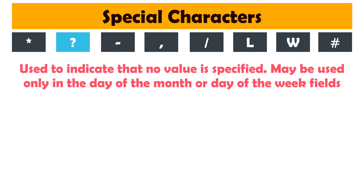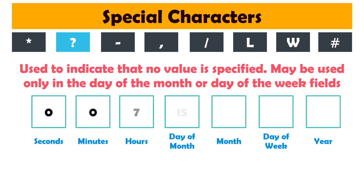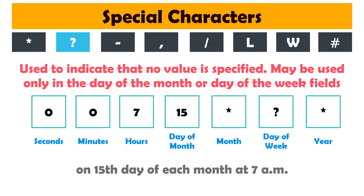Question mark is used to indicate that no value is specified. It may be used only in the day of the month or day of the week fields. For example, '0 0 7 15 * ?' means that the bot should be triggered on the 15th day of each month at 7 a.m. Here we have replaced the day of the week with a question mark, so that the day is not relevant — the main thing is that it is the 15th day of the month.